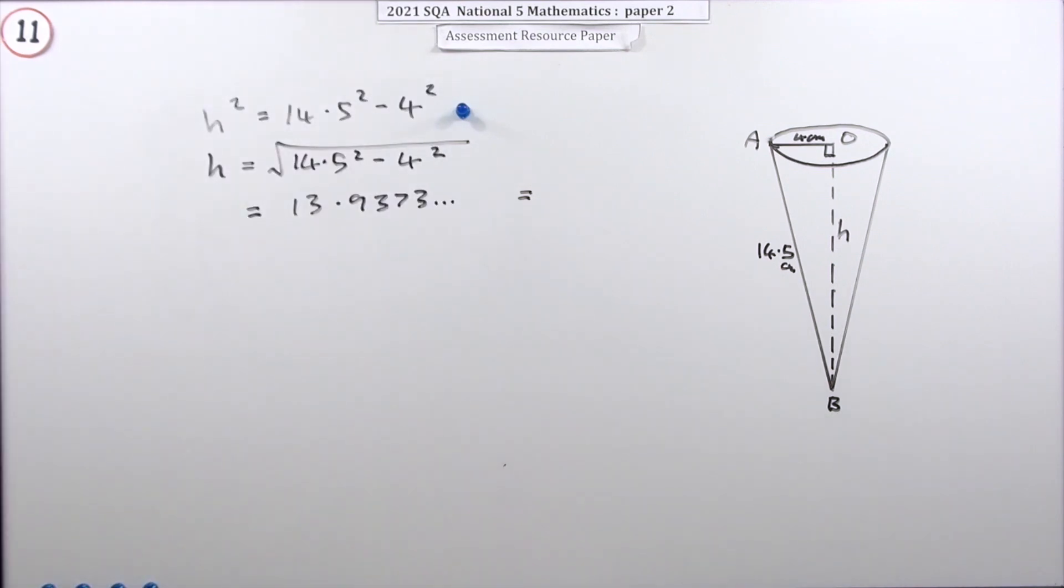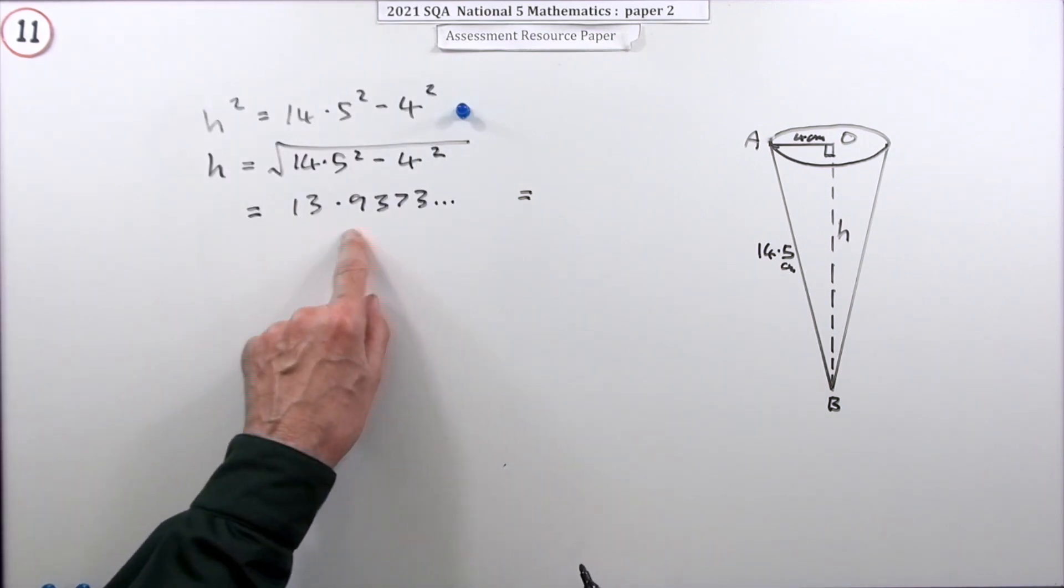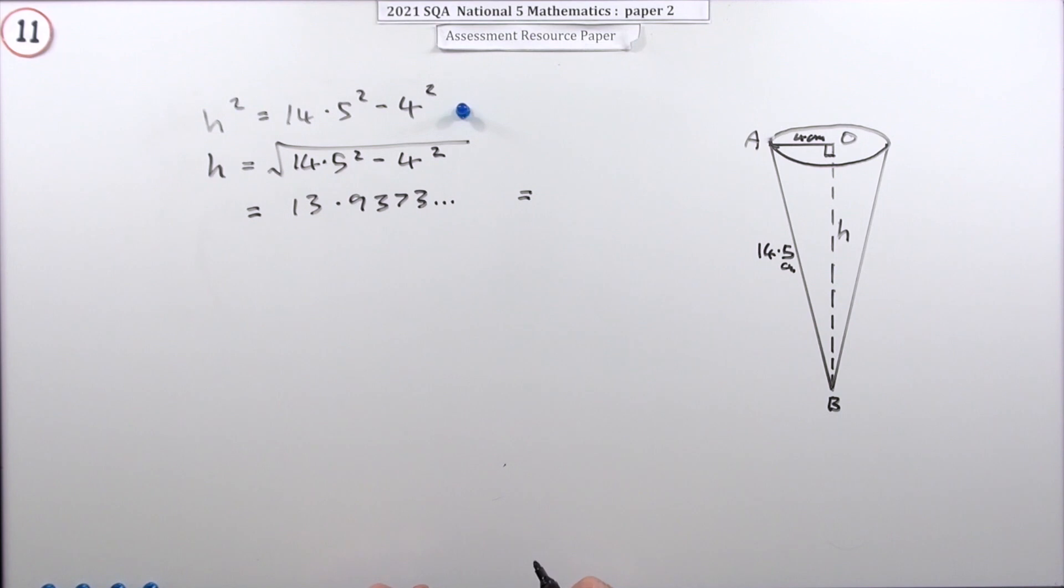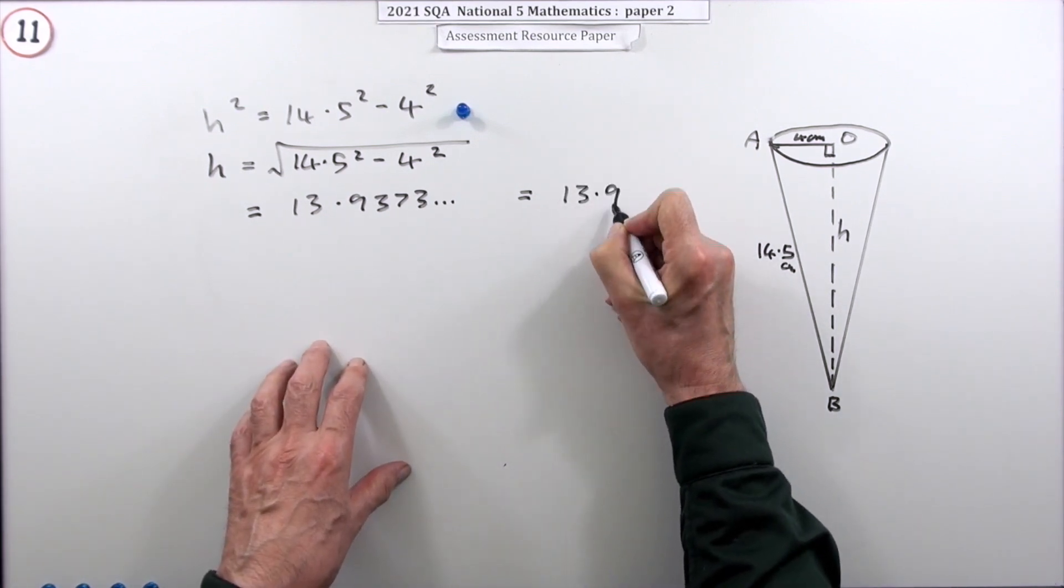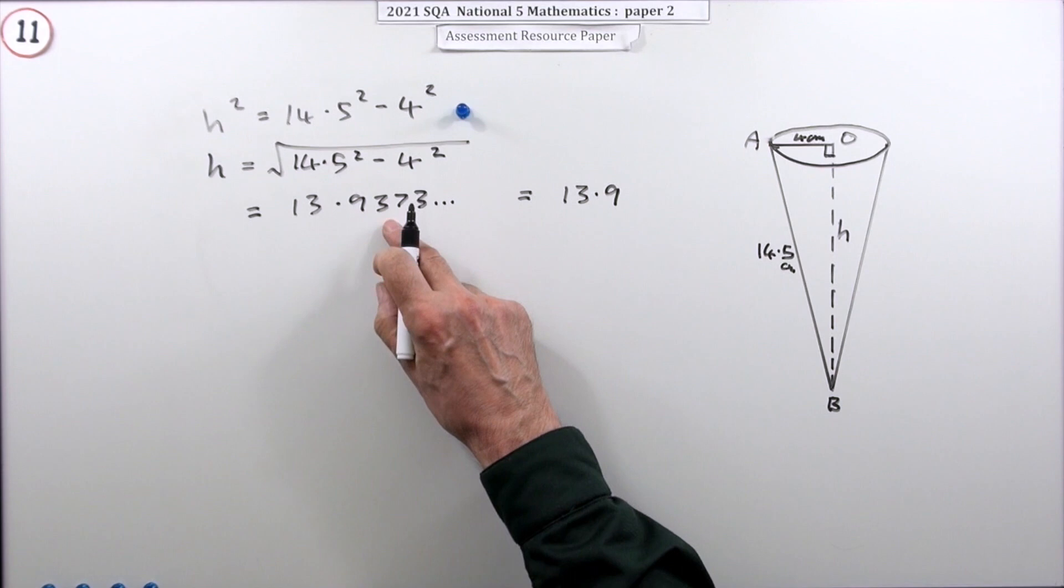The answer wants two significant figures, so make sure you give this one three. So if you did want to round it off, you could put 13.9, but I'm going to leave it like this though.